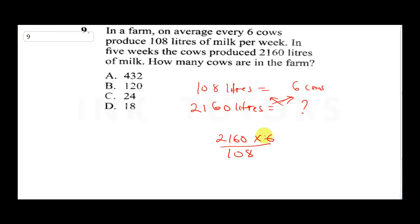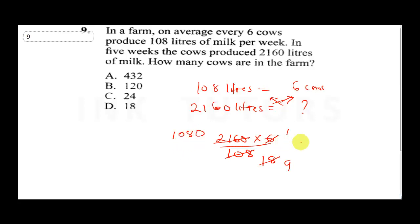Can 6 divide 108? Yes — 6 into 108: 6 into 10 is 1 remainder 4, 6 into 48 is 8, so 108 ÷ 6 = 18. Then 2,160 ÷ 18: dividing step by step we get 120. So our final answer is 120 cows. The correct answer is B.